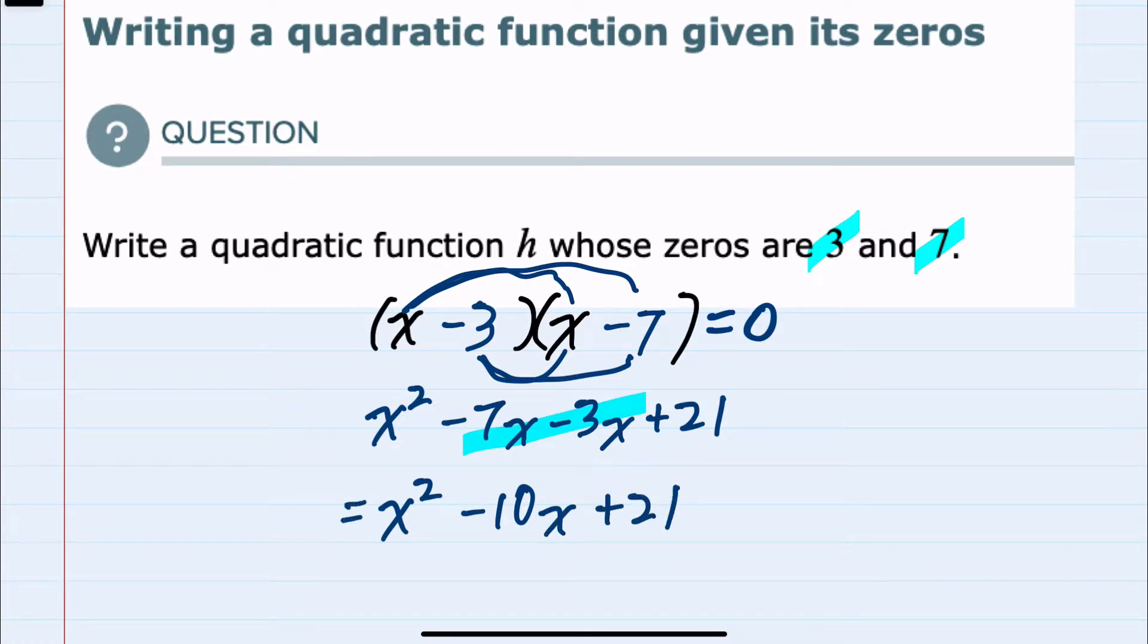This would be our h of x function that has zeros at both 3 and 7. And I know that it has those zeros because I made the factors go to 0 at both of those two values.